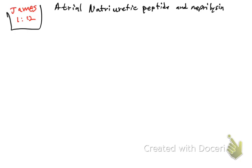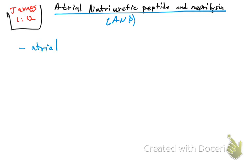Now I'd like to explain what atrial natriuretic peptide is. Atrial natriuretic peptide is abbreviated as ANP. This atrial peptide is secreted by the atrial cardiomyocytes.